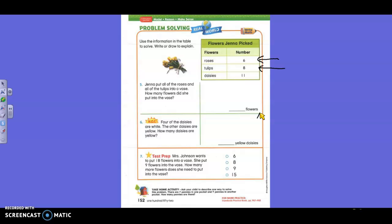Number six. Hot problem. Four of the daisies are white. The other daisies are yellow. How many daisies are yellow? Guys, how many daisies are there? There are 11 daisies. Four of them are white. So if we did minus four, we know that the rest of them have to be yellow. 11 minus four. 11 minus four white ones. So what is 11 minus four, boys and girls? Seven. Seven. So how many daisies are yellow? Seven. Seven. You just had to use that up there, but all right.